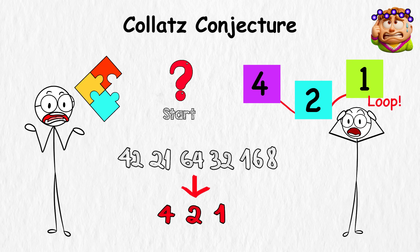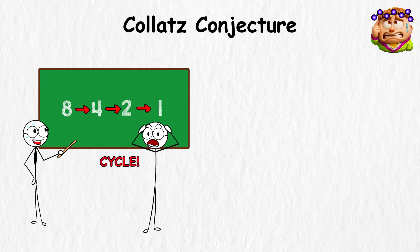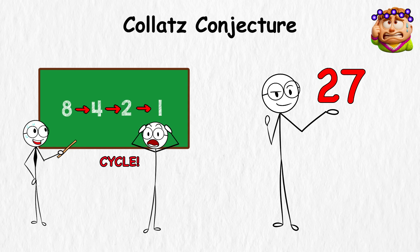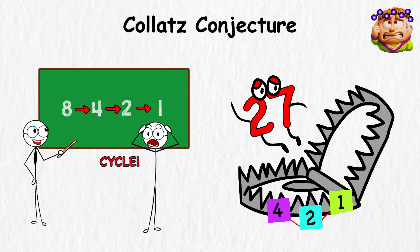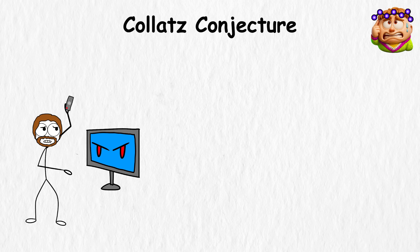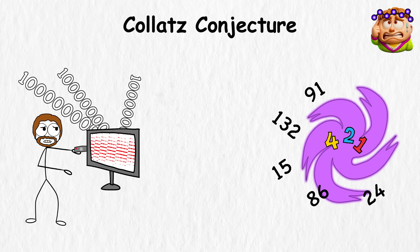Try it with 10 and you'll see it quickly shrink down into the cycle. Try it with something messy like 27 and it goes completely haywire first, shooting up and down through more than a hundred steps, but it still can't escape the trap. Mathematicians have pushed this with computers into the billions, and every single time the numbers give up and spiral down to that little three-step loop.